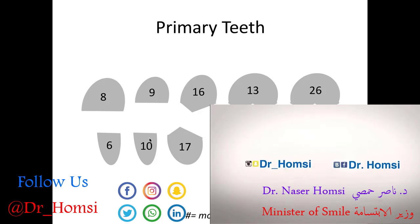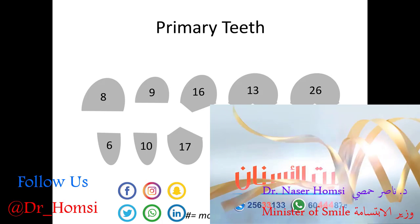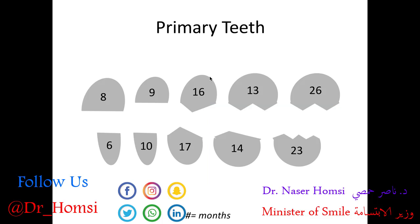Here we have the central incisors, lateral incisors, canines, first molars, and second molars — all of the primary teeth, looking at one side of the complete primary dentition. There is some discrepancy in the literature, but for the dental board exams, every tooth erupts in a range normally within a six-month time period. However, for the board exam it's much more practical to remember a single number for each tooth, and even more importantly, the order that those teeth normally erupt in.